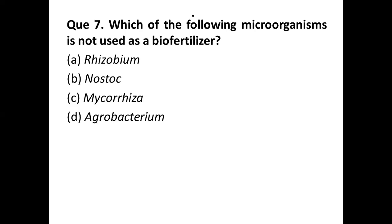Question number seven: which of the following microorganisms is not used as a biofertilizer? Options are: (a) Rhizobium, (b) Nostoc, (c) Mycorrhiza, and (d) Agrobacterium. Rhizobium and Nostoc were already discussed, so the correct answer is option (d) Agrobacterium. Mycorrhiza is a symbiotic relationship between the roots of higher plants — phosphate is absorbed by the fungus and passed on to the plant; it also increases plant tolerance to salinity and drought and offers resistance to some pathogens.